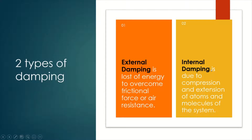But there is also internal damping. Internal damping is due to compression and extension of atoms and molecules of the system. An example is an oscillating spring — a spring stretches and compresses. That compression and extension of the molecules and atoms in the system causes internal damping.